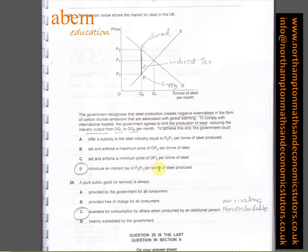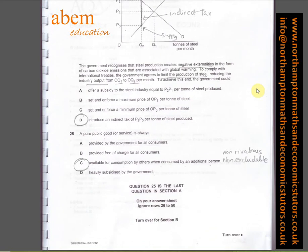Question number twenty-four. I have said D is the answer: to introduce an indirect tax of P2 to P3 per ton of steel produced. If you look here, that's the indirect tax. From P1 to P2 is the burden borne by the customers, and from P1 to P3 is the burden borne by the producers.